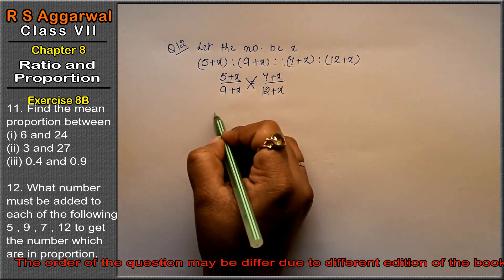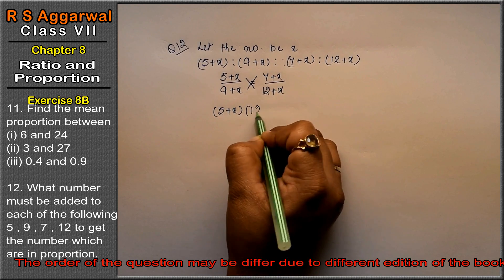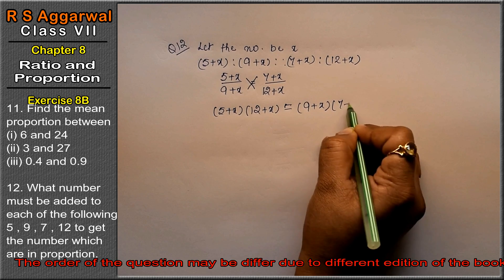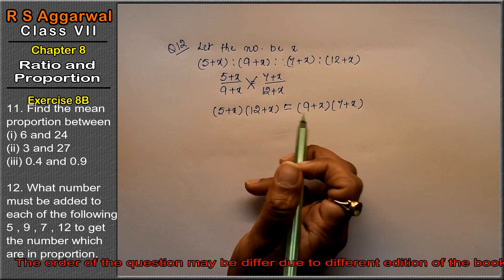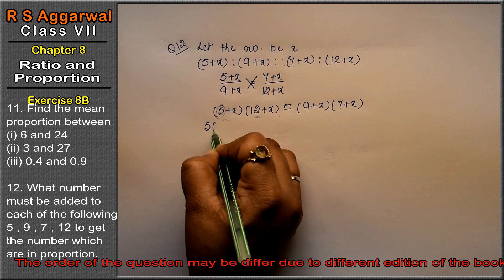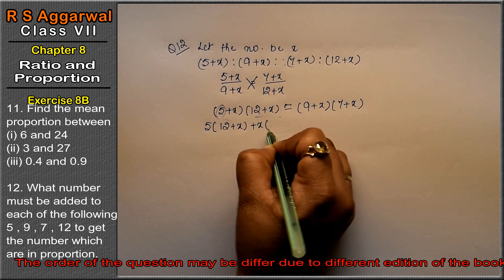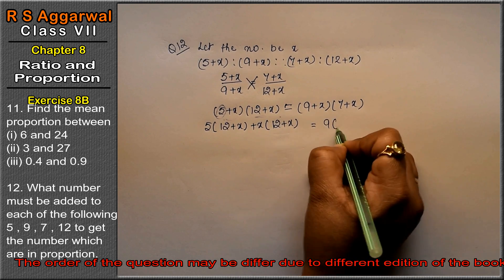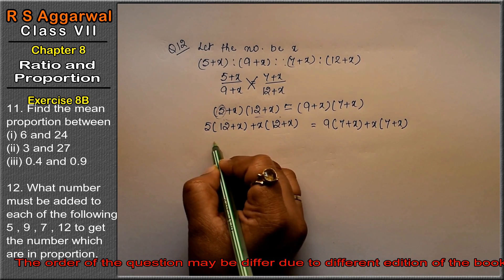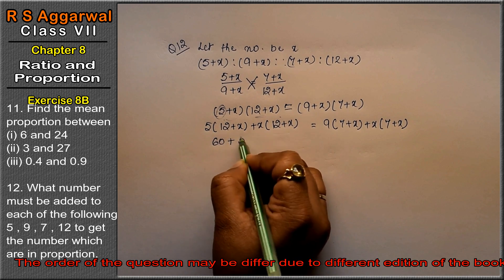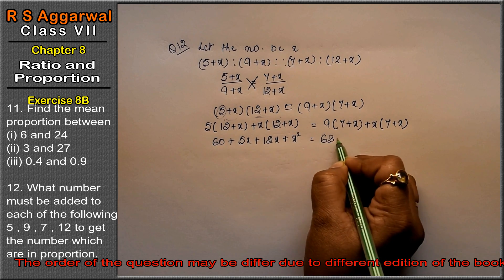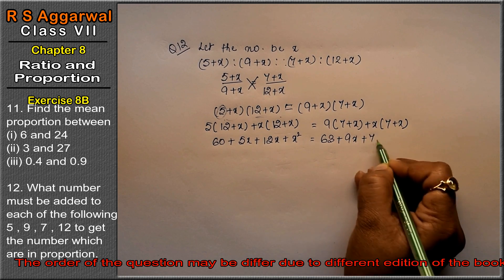Now cross multiply: 5 plus x into 12 plus x equals 9 plus x into 7 plus x. Expanding: 5 into 12 plus 5 into x plus x into 12 plus x squared equals 9 into 7 plus 9 into x plus x into 7 plus x squared. That gives us 60 plus 5x plus 12x plus x squared equals 63 plus 9x plus 7x plus x squared.